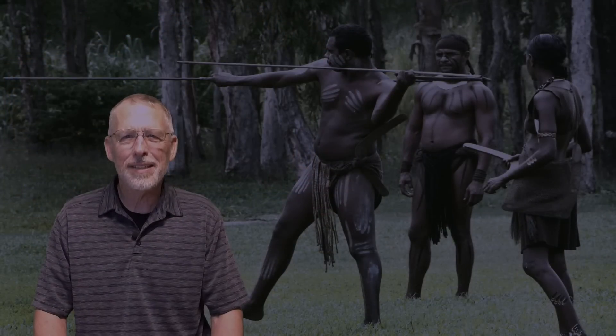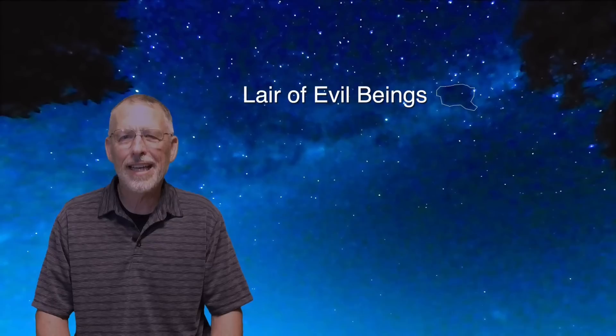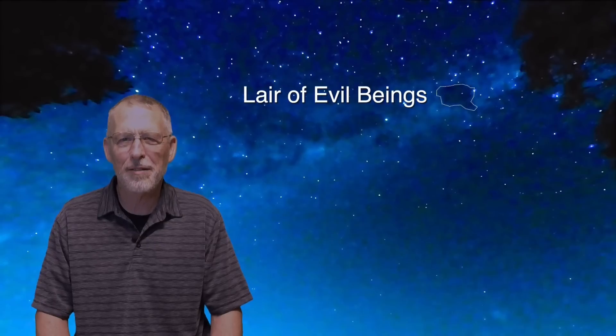Indigenous people in the Southern Hemisphere tell stories about their brilliant night sky. For example, the dark patch between the Southern Cross and the pointer stars is identified as a layer of evil beings by some Aboriginal groups.